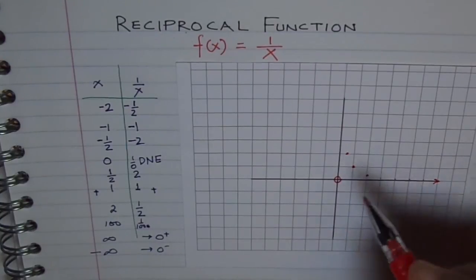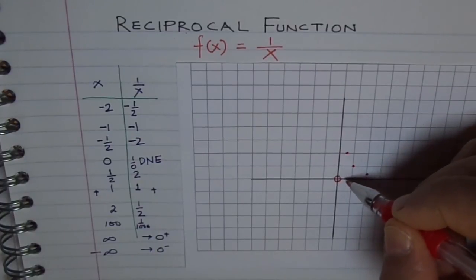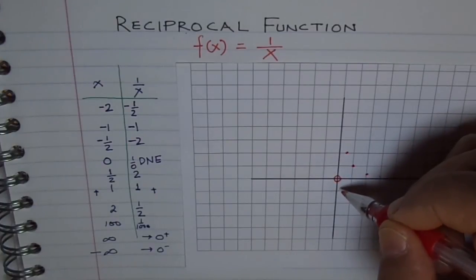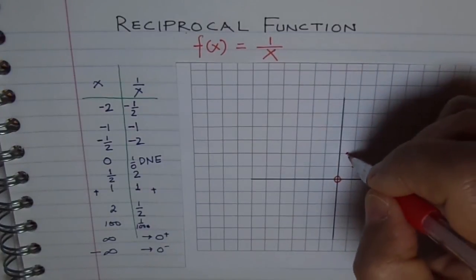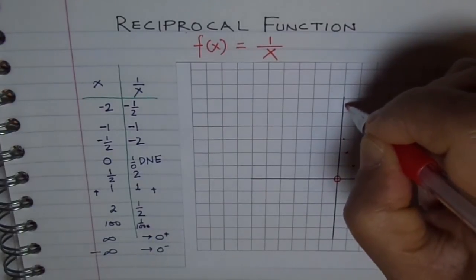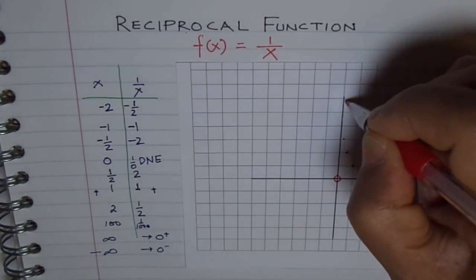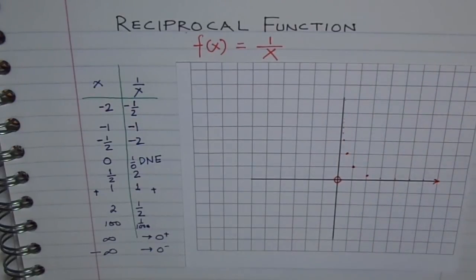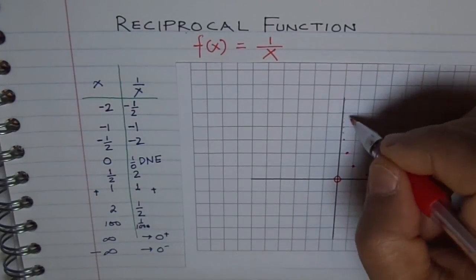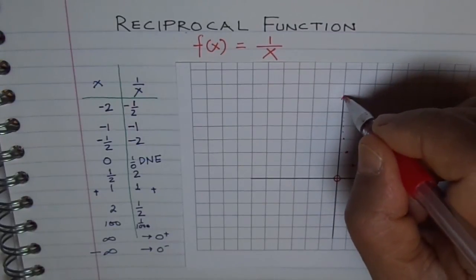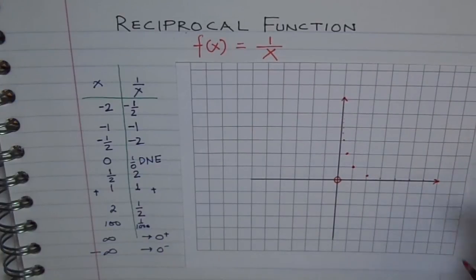On this side also, if we go closer and closer to 0 — taking x values like 1 over 3, 1 over 10 — the reciprocal will be 3 or 10 respectively, growing very large. You will see that you approach the y-axis. You are approaching the y-axis from the positive side, going towards positive infinity. The reciprocal of a positive number is always positive.